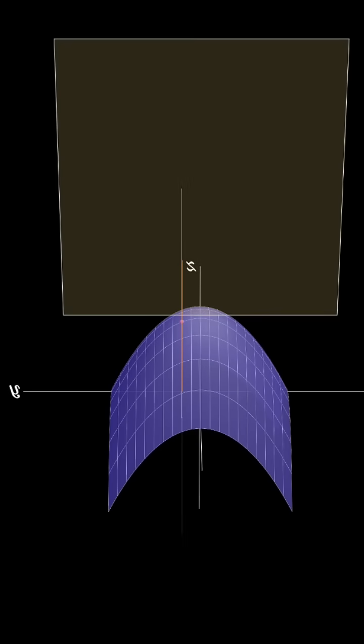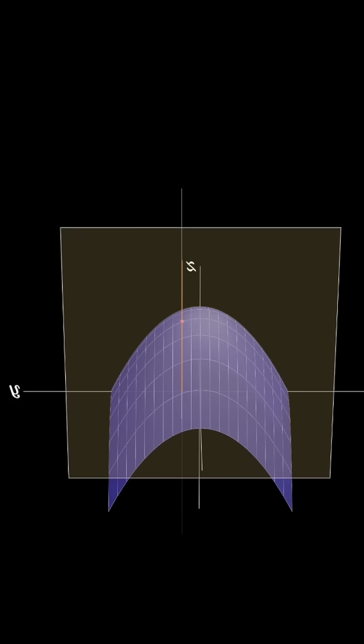Next we do a similar thing by fixing the x-value and cutting the surface with a plane at the given x-coordinate. Again, the surface intersects this plane in a curve, and we can find the tangent line to this curve at the point of interest. This is done using the partial derivative with respect to y.